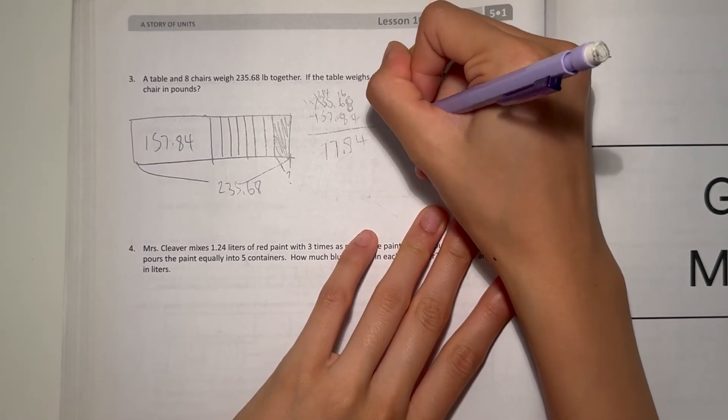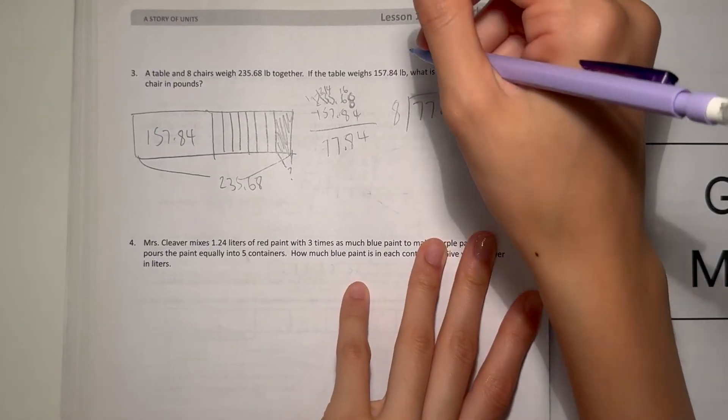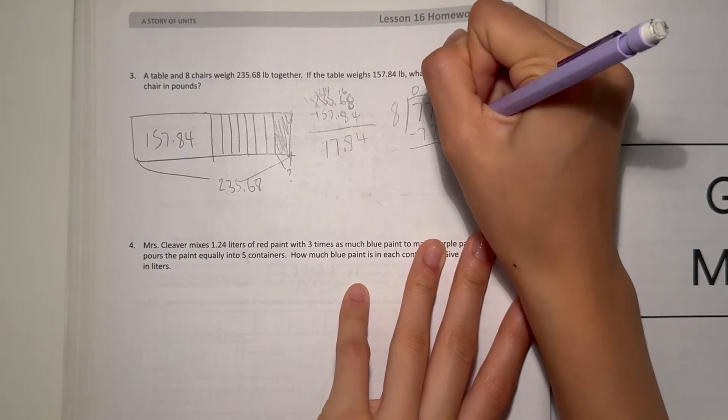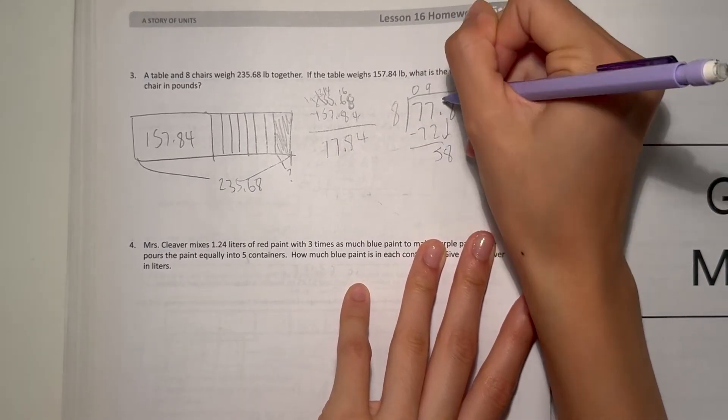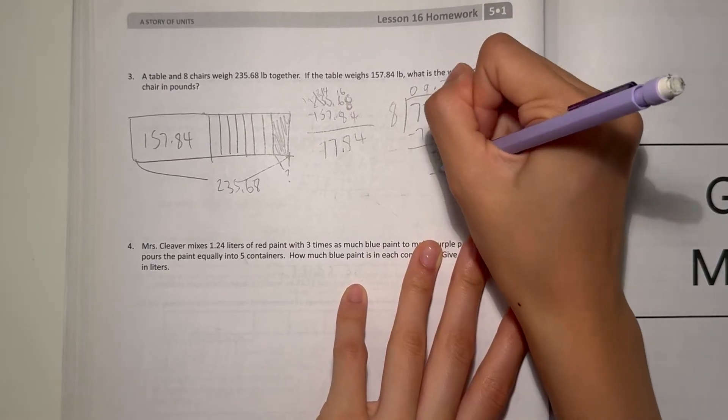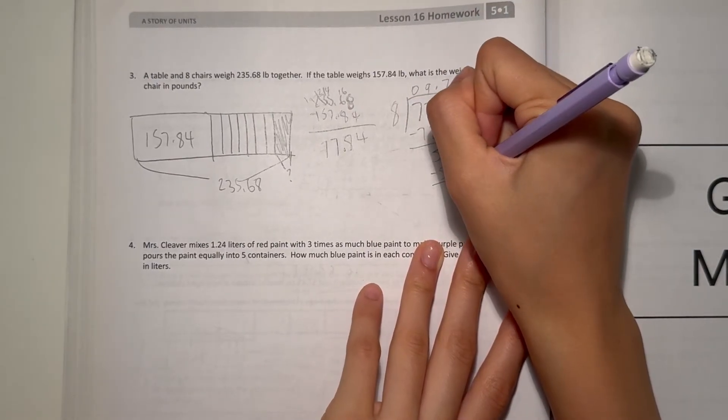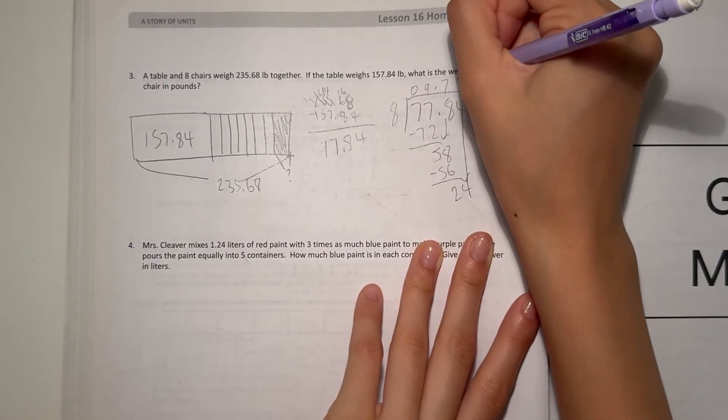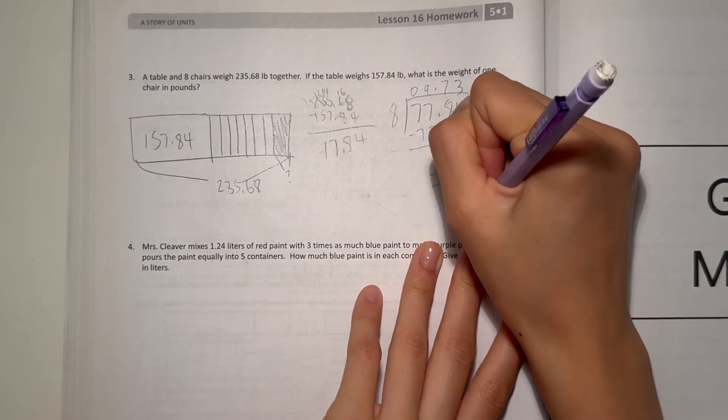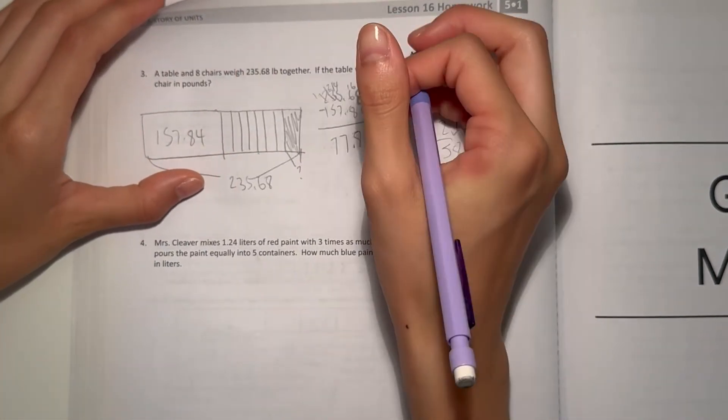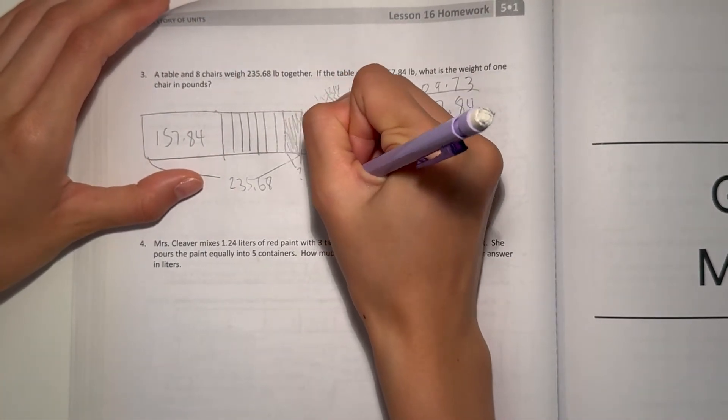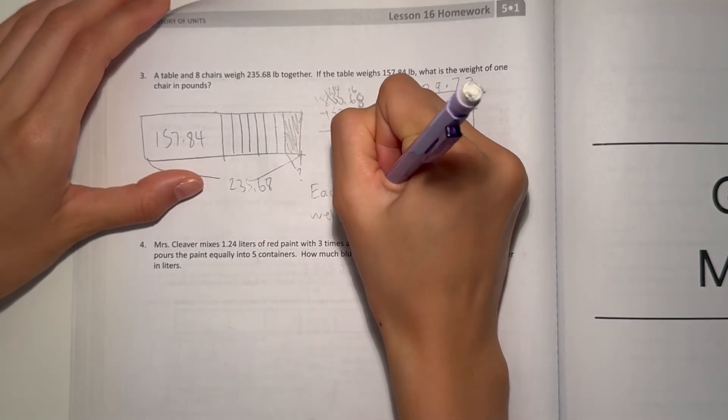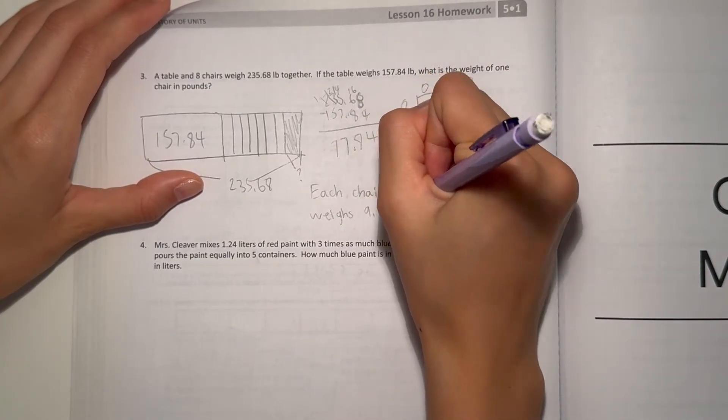8 goes 9 times into 77, that gives us 5. Bring the 8 down, 8 goes 7 times into 58, and 8 goes 3 times into 24. So 9.73. Each chair weighs 9.73 pounds.